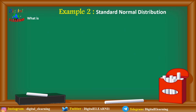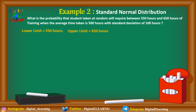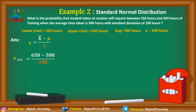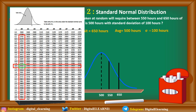Let's take another example: what is the probability that a student taken at random will require between 550 hours and 650 hours to complete a training, when the average time is 500 hours and the standard deviation is 100 hours? The lower limit is 550, upper limit is 650, mean is 500, and sigma is 100 hours. Applying the standard normal distribution formula, Z at 650 = (650 − 500) / 100 = 1.5, and Z at 550 = (550 − 500) / 100 = 0.5. From the Z-table, at Z = 1.5 the area under the curve is 0.9332.